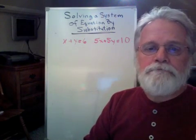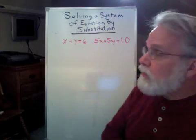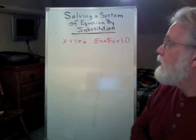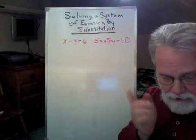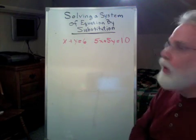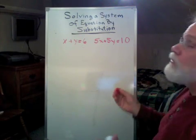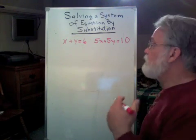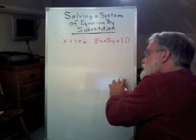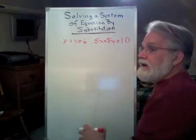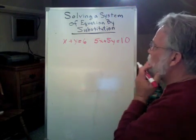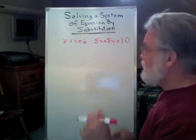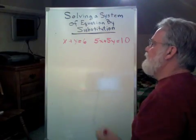Let's look at one more system of two linear equations, because this one's a little bit different and it brings home a point. We're going to do this just like we did the other ones. If you remember the last one, we solved for x, we substituted x, then we solved the equation, then we took the result and put it back in. Then we did a check, and the check comes out equal every time. Let's do this one one more time.